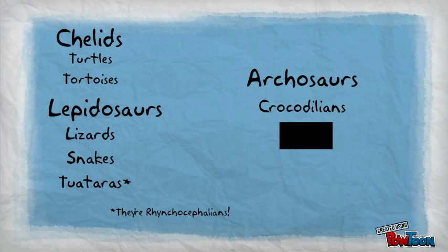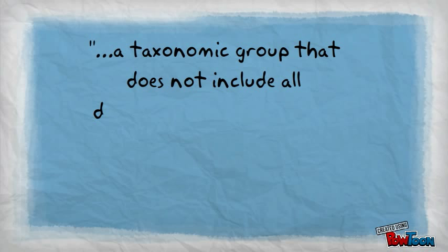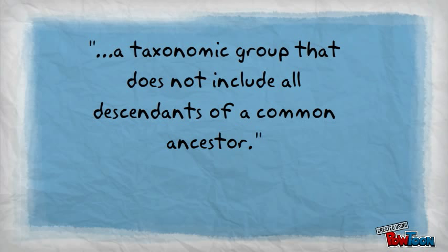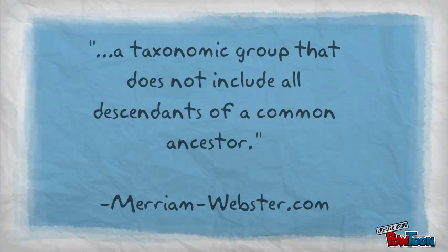By ignoring birds, reptiles becomes what is known in taxonomy as a paraphyletic group. A paraphyletic group is a grouping of organisms that has been bundled together despite skipping over related organisms that should really be included. This is a big no-no when you're trying to work out accurate phylogenetic groupings.